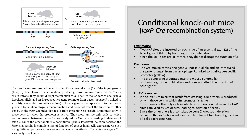To address these problems, mouse geneticists have devised a clever technique to inactivate target genes in specific types of somatic cells or at particular times during development. This technique employs site-specific DNA recombination sites called LoxP sites, and the enzyme Cre that catalyzes recombination between them. The LoxP-Cre recombination system is derived from bacteriophage P1, but this site-specific recombination system also functions when placed in mouse cells. An essential feature of this technique is that expression of Cre is controlled by a cell-type specific promoter. In LoxP-Cre mice, inactivation of the gene of interest, X, occurs only in cells in which the promoter controlling the Cre gene is active.